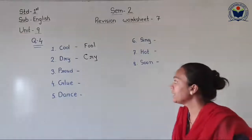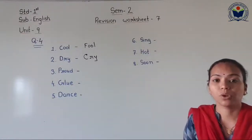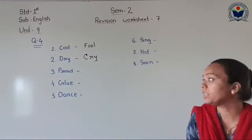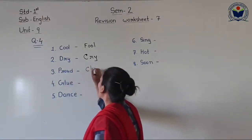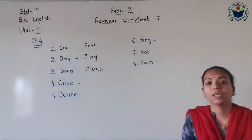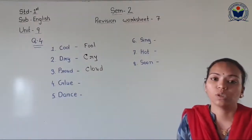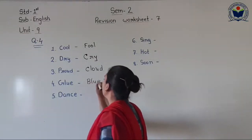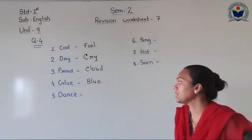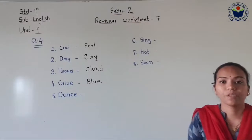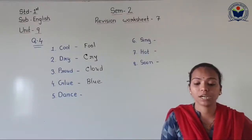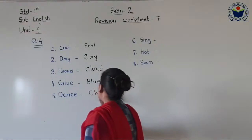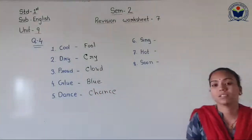Number 3 is P-R-O-U-D, proud — the rhyming word is C-L-O-U-D, cloud. Number 4 is blue — C-L-U-E — the rhyming word is B-L-U-E, blue. Number 5 is D-A-N-C-E, dance — you can write C-H-A-N-C-E, chance. Dance — chance.